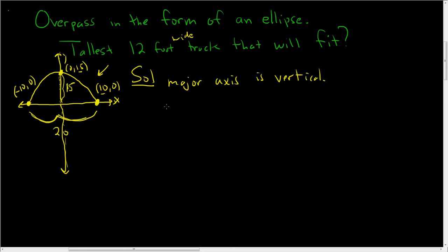So the general formula for an ellipse with center 0, 0 and a major axis being vertical is x squared over b squared plus y squared over a squared equals 1. A is always bigger than b in an ellipse.